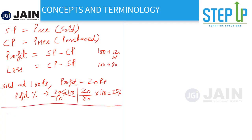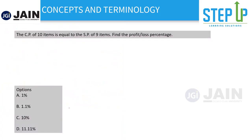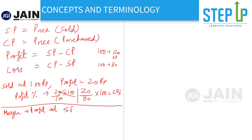A slightly different concept, rarely asked, is margin. Margin is your profit realized at your selling price — meaning profit percentage calculated on selling price. That's the basic terminology covered.